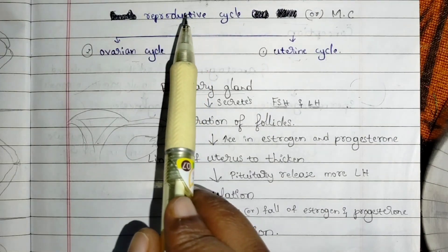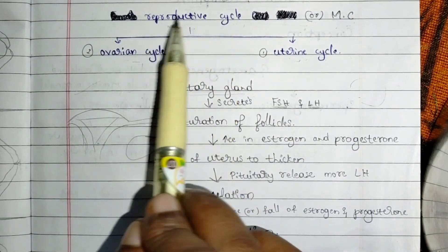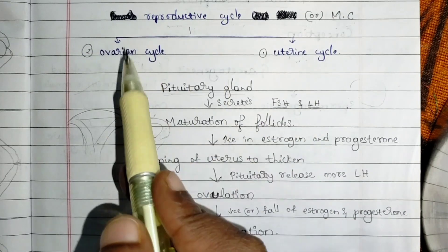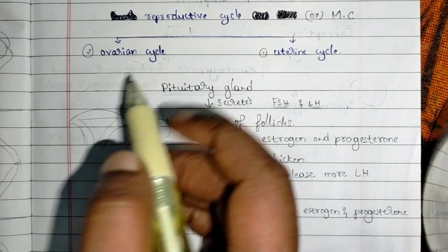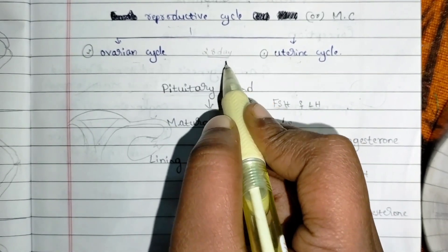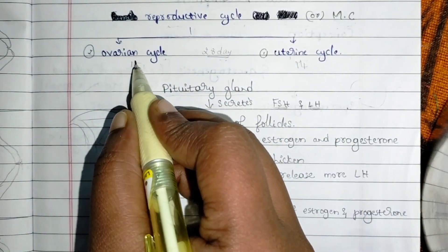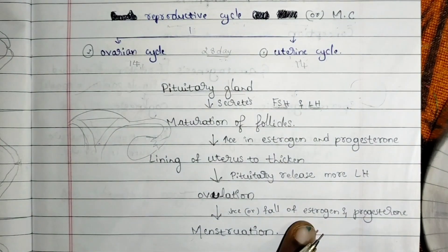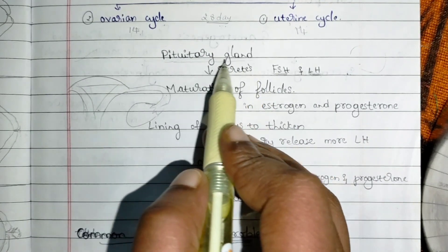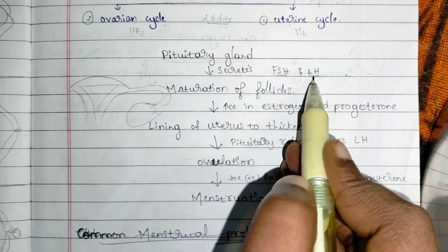The menstrual cycle is also known as the reproductive cycle or female reproductive cycle. This cycle is divided into two sub-cycles: the uterine cycle and the ovarian cycle. Generally, the menstrual cycle takes place over 28 days every month. These 28 days are divided into two equal parts of 14 days each.